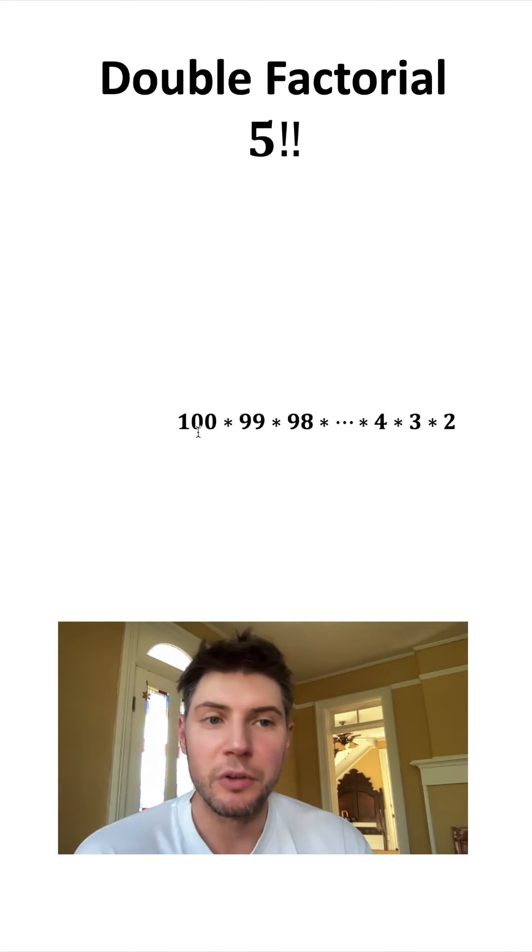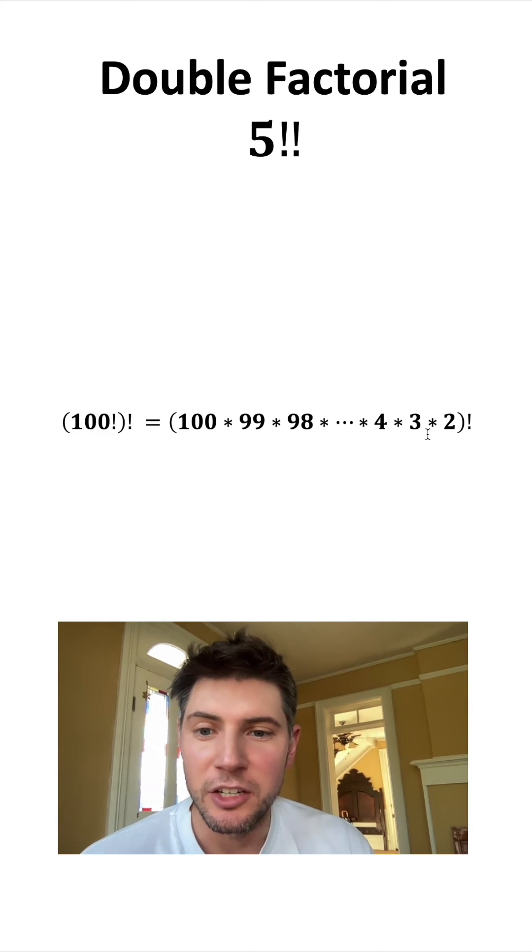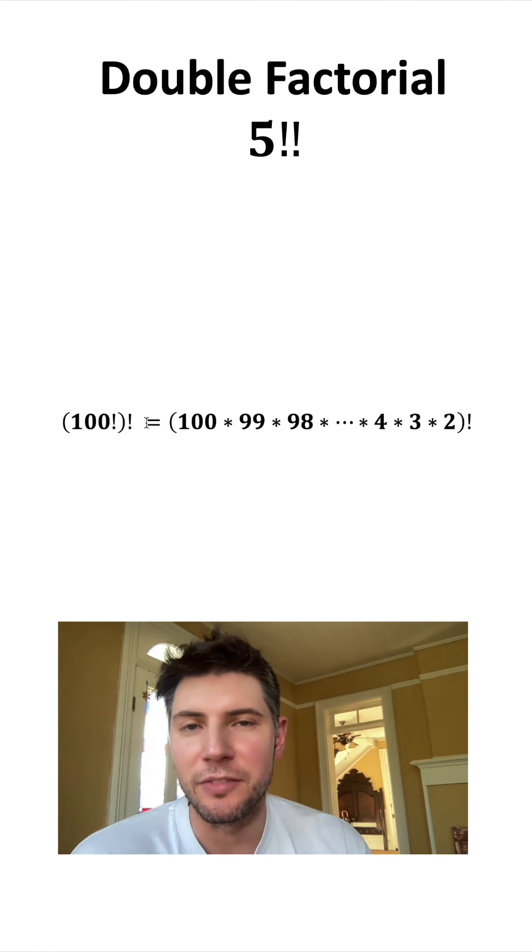That's wrong. So I could hear someone saying, well, what if you want to take all the numbers even and odd all the way down from 100 to 2 and then take the factorial of that? Well, if you ever wanted to do that, you would just write it like this. That way it says do the 100 factorial first and then take the factorial of that number.